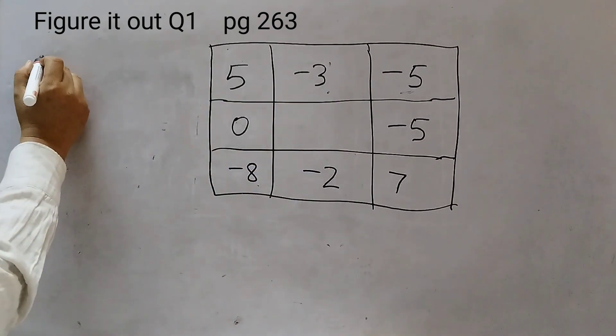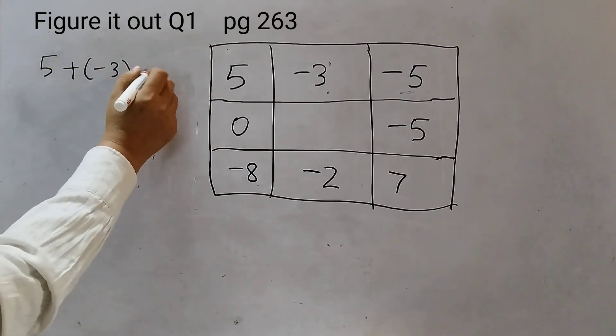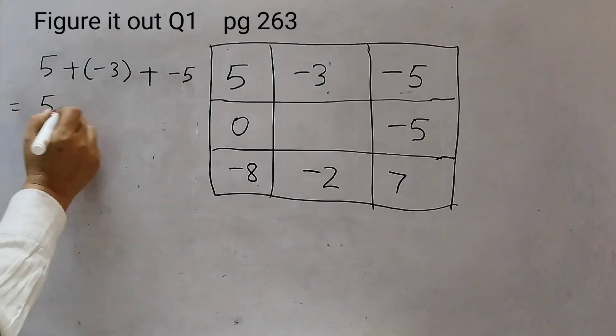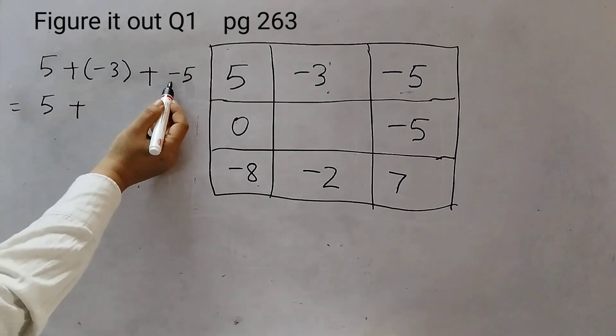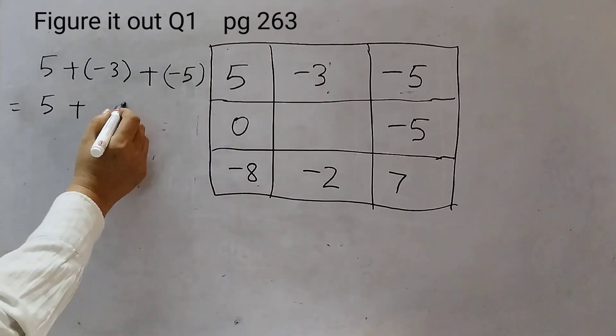First, I will write the numbers. 5 plus minus 3 plus minus 5. 5 plus, both have minus sign, right? So, add up the numbers 3 plus 5, 8 and put the minus sign.